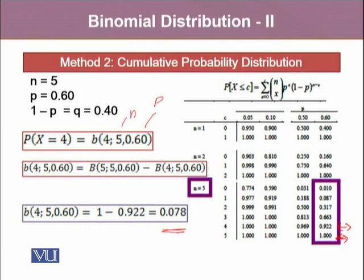The cumulative distribution function works a bit differently compared to the probability mass function, because in the cumulative function it adds up all the previous probabilities. And if we want to find out the probability at a point, we subtract all the previous probabilities from the probability that includes the probability at that desired point.